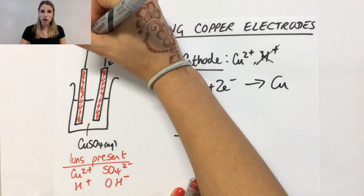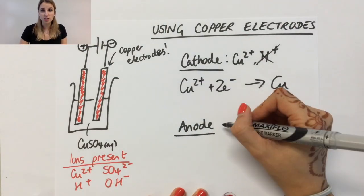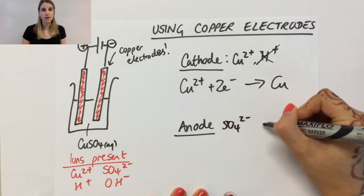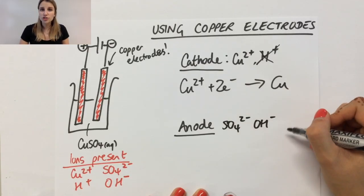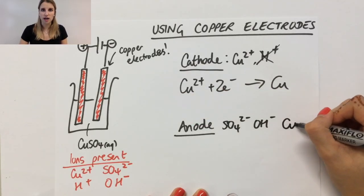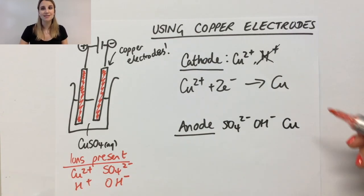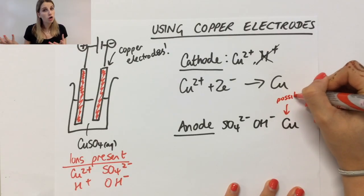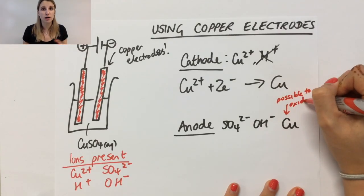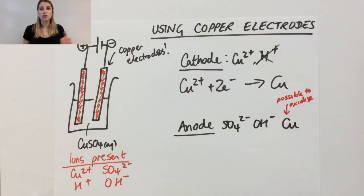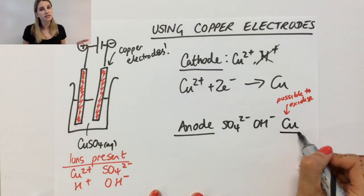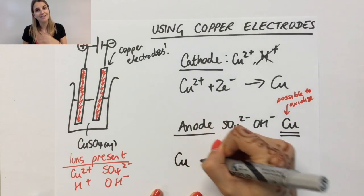At the anode, I've got the sulfate and the hydroxide as opportunities of things that could be oxidized, but also the copper could be oxidized there. Because the copper is more easily oxidized than either the sulfate or the hydroxide, the copper is actually oxidized preferentially, which means the copper metal can turn into copper ions and electrons.